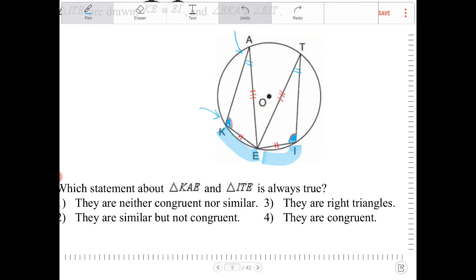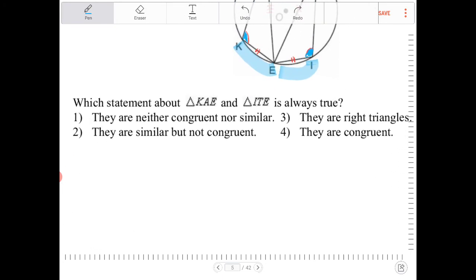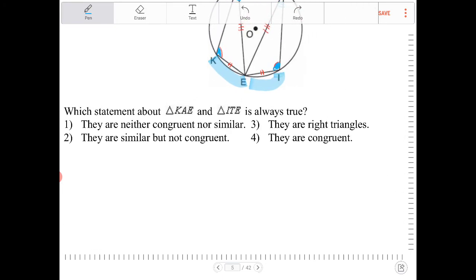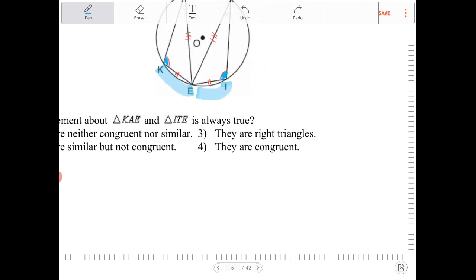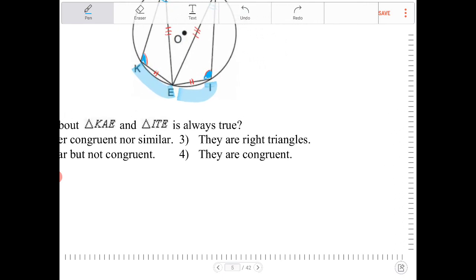All right, so which option best fits our way of thinking here? Let's take it. They are neither congruent nor similar. That's definitely false, because we just showed that they are congruent. Option two, they are similar but not congruent. They are most definitely congruent. They are right triangles. We have not proven that they are right triangles. They are congruent. So that would be option four.